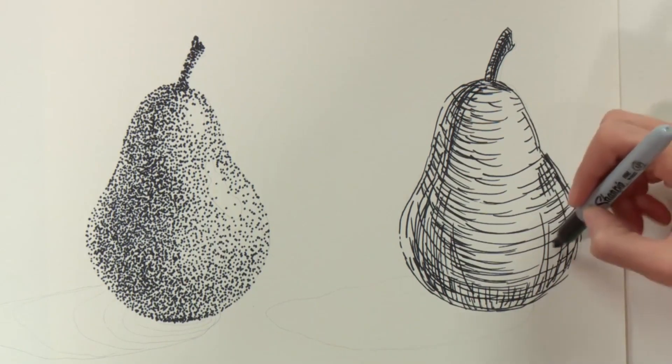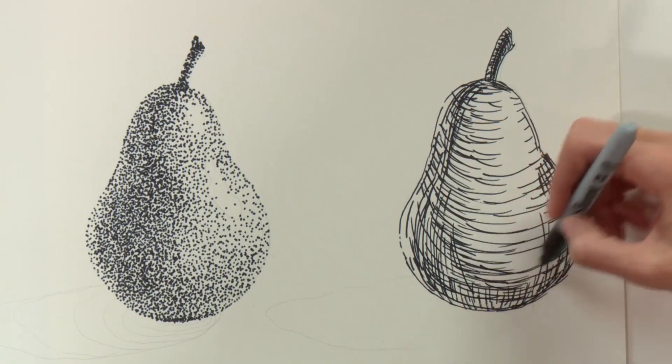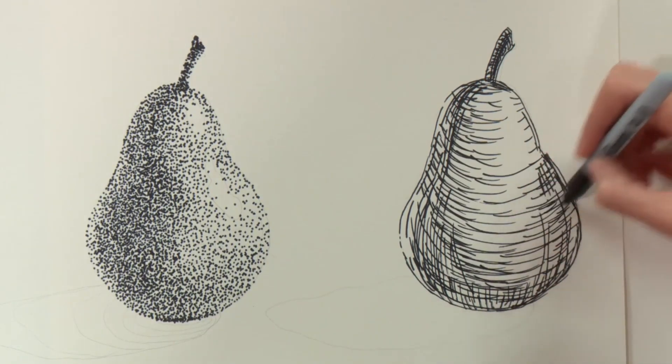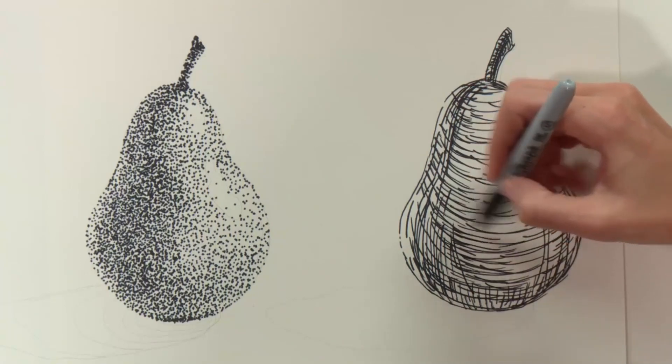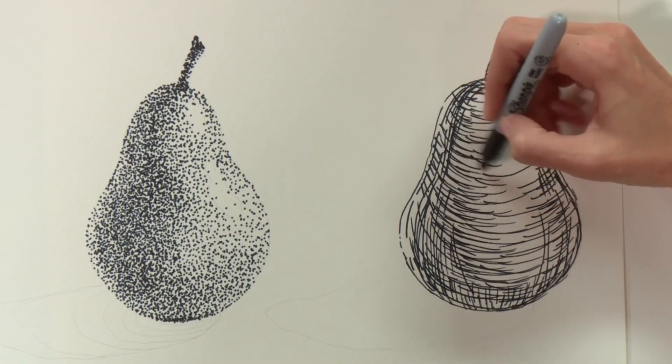With pencil you can erase, marker not so much. But the more lines you put down, the more defined this pear becomes.